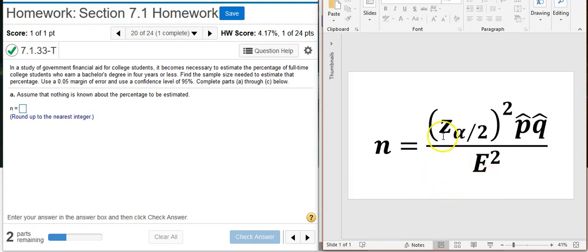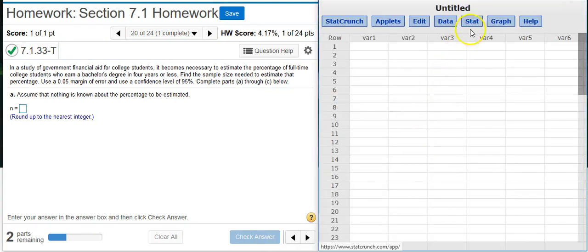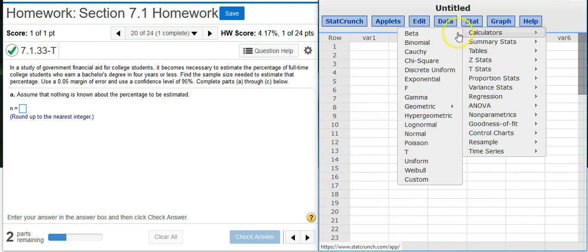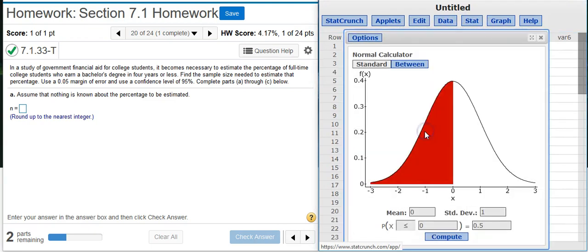First up, let's go get our z-score, which means I need to go back into StatCrunch and pull up my normal calculator. Remember that z-scores come from the standard normal distribution, which have a mean value of 0 and a standard deviation of 1. So here I've got the default values, and that's exactly what I need for my standard normal distribution.